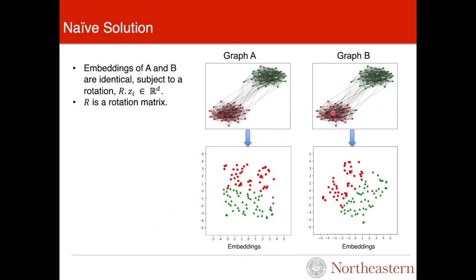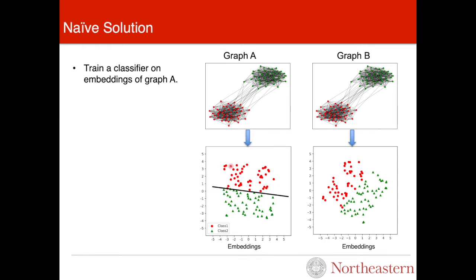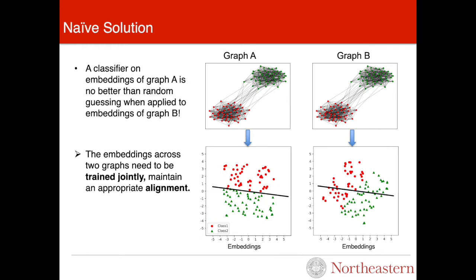We take graph B and produce its node embedding. The embeddings of graph B are rotations of embeddings of graph A. We use the embeddings of graph A to train an almost perfect classifier between two classes. Then, we transfer the classifier trained on graph A to graph B. As we can see, the classifier fails to correctly classify exactly the same graphs when the embeddings are rotated.